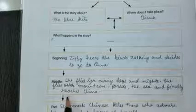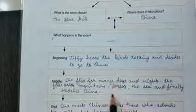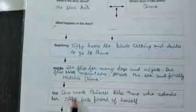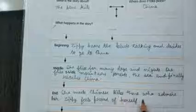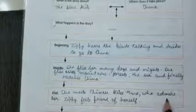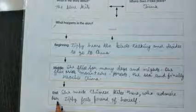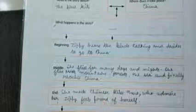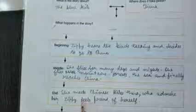And in the end, what happened when she reached China? She meets Chinese kites there who admire her. They admire Zippy, they talked about how beautiful you are, wow you are looking so great. Then Zippy feels proud of herself that she also looks very beautiful. This happens in the end.